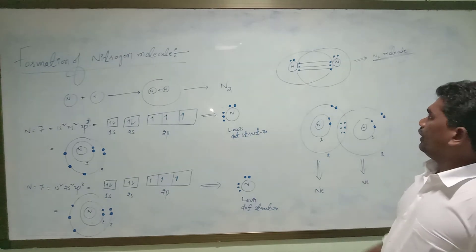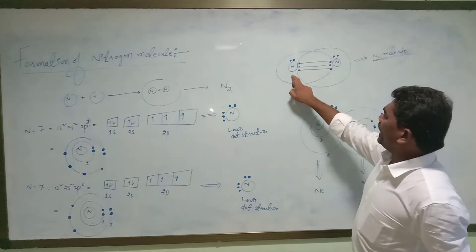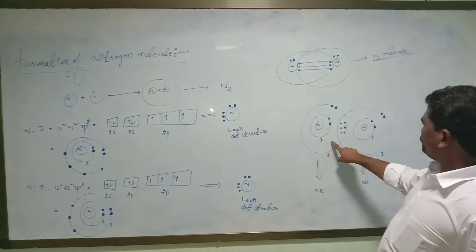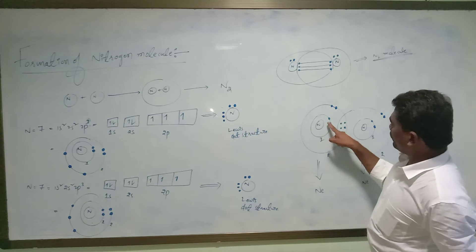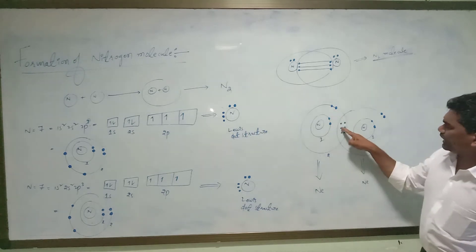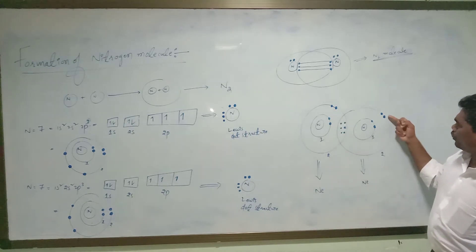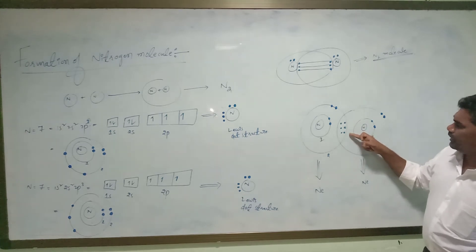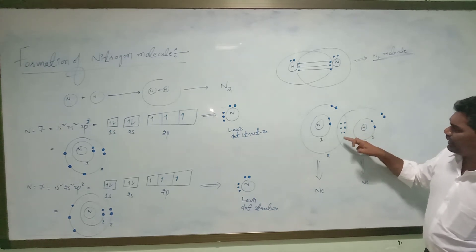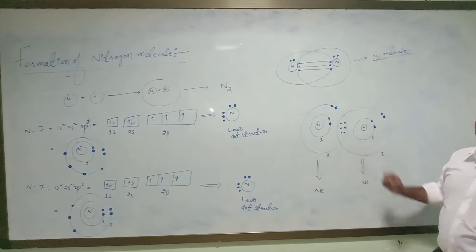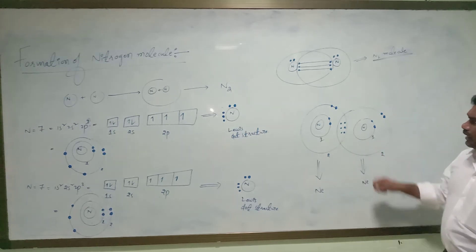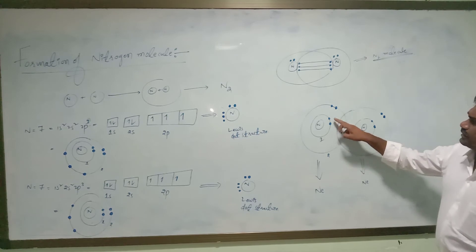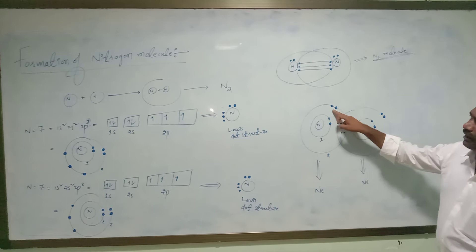By having eight electrons in the last orbit of nitrogen — 1s², 2s², 2p³ — with three electrons contributing from each side, that is six shared electrons plus two paired electrons equals eight electrons in the last orbit. So six electrons are being shared in between the two nitrogen atoms, and six plus two equals eight electrons for each nitrogen atom.